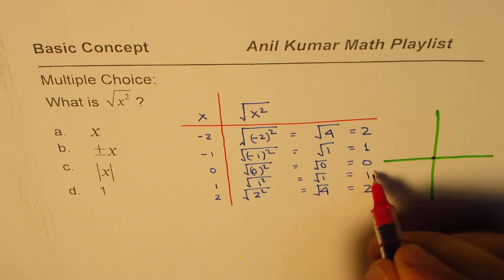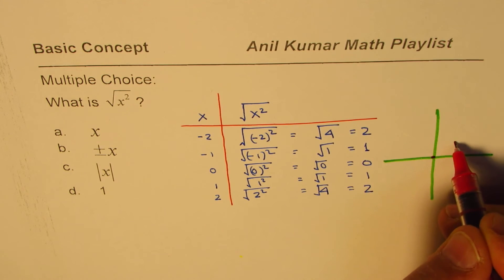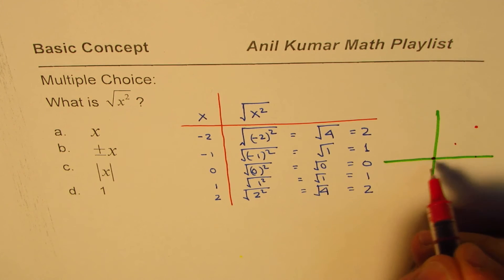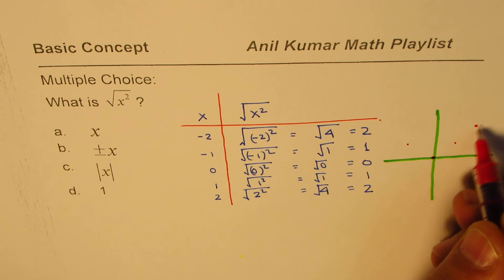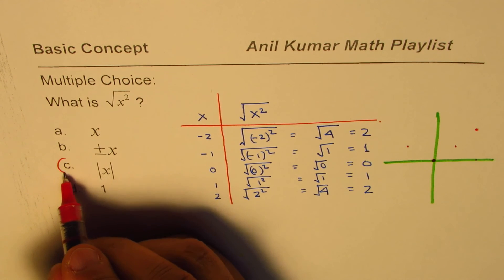You will get points. This is 0. And for 1, it is 1. For 2, it is 2. For minus 1, it is 1. For minus 2, it is 2. So what you get is an absolute function. That is the solution.